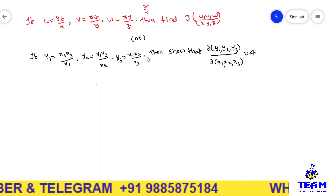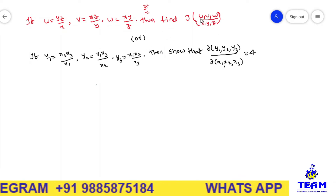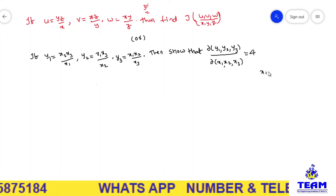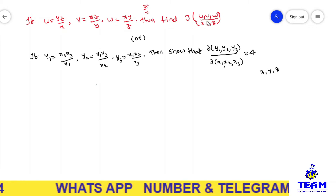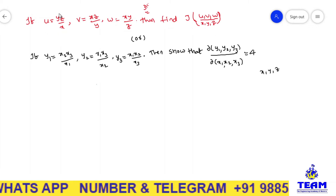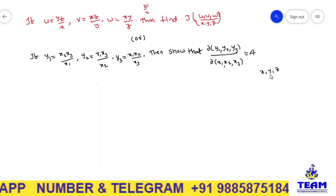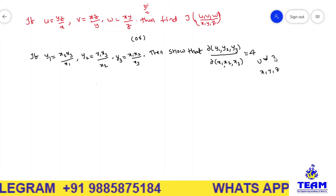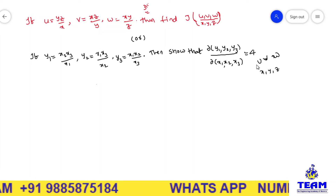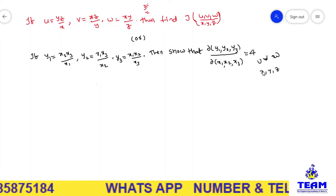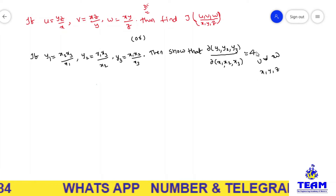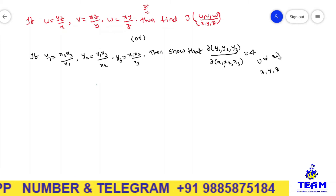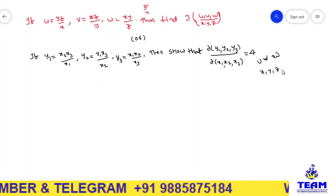Let me explain why these two problems are similar. For u = yz/x, yz are in the numerator and x is in the denominator. For v = xz/y, xz are in the numerator and y is in the denominator. For w = xy/z, xy are in the numerator and z is in the denominator. Similarly, for y1 = x2·x3/x1, x2 and x3 are in the numerator and x1 is in the denominator.